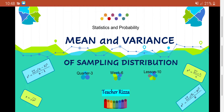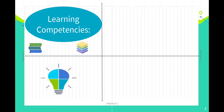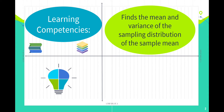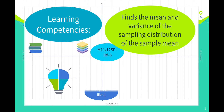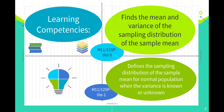Good day! This is Teacher Riza and this is our lesson 10 for Q3 in Statistics and Probability: Mean and Variance of Sampling Distribution. The learning competencies are: finds the mean and variance of the sampling distribution of the sample mean, and defines the sampling distribution of the sample mean for normal population when the variance is known or unknown.